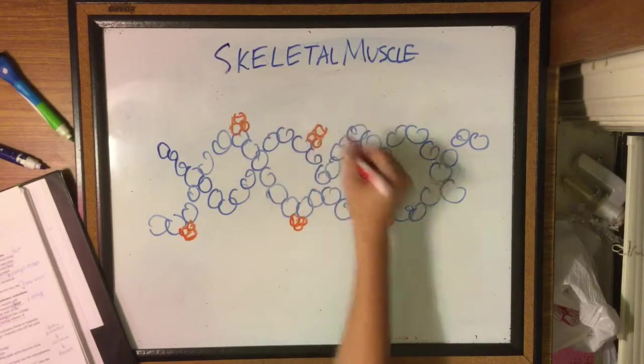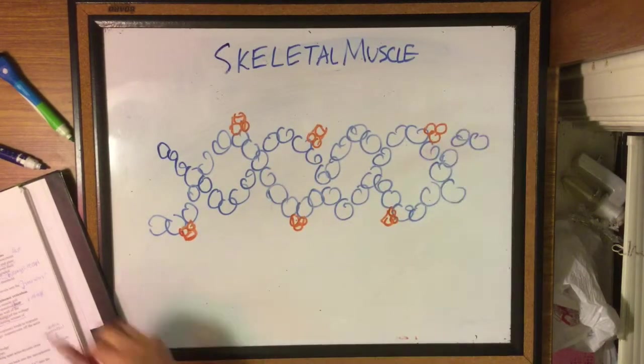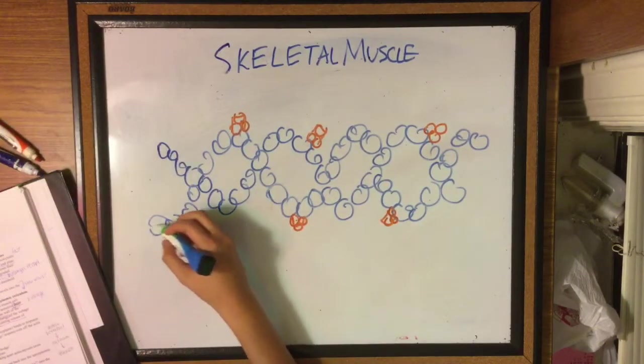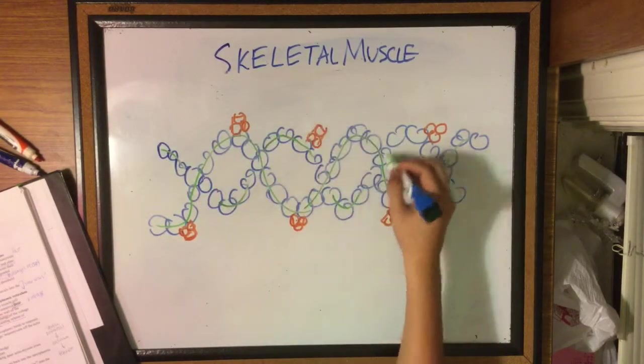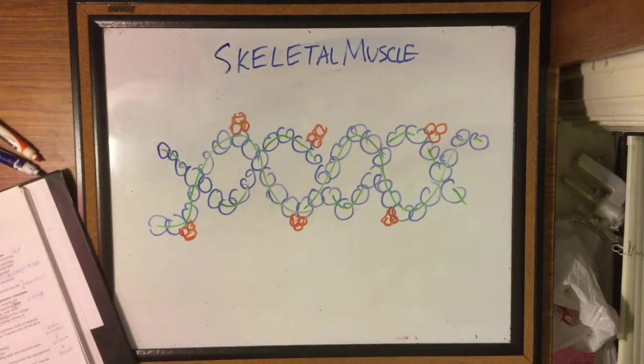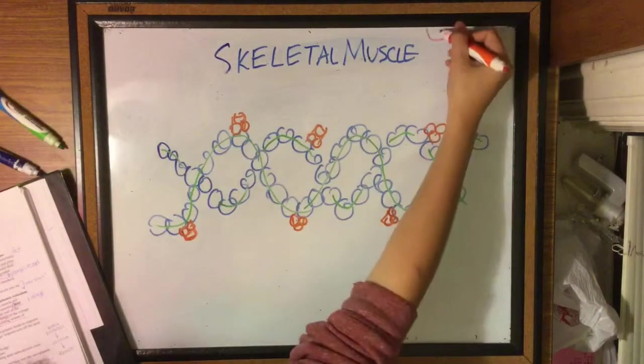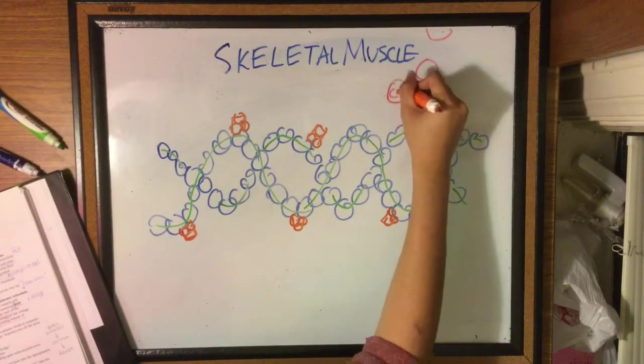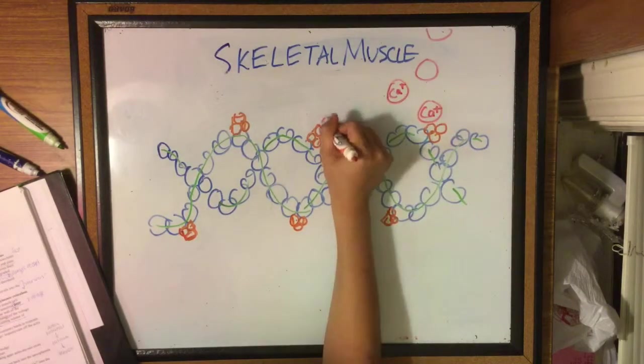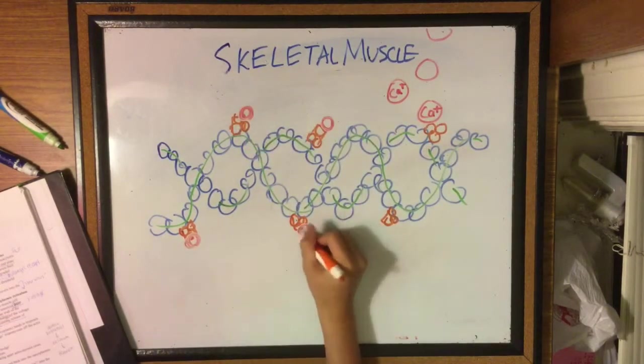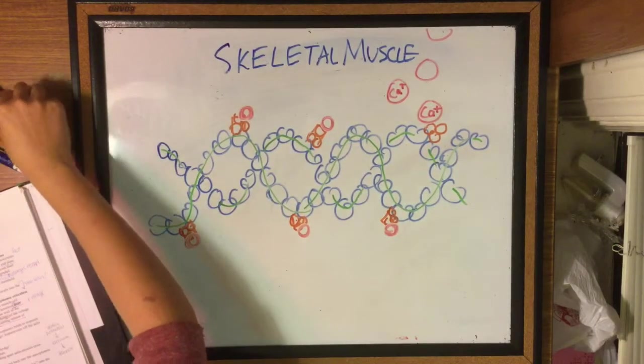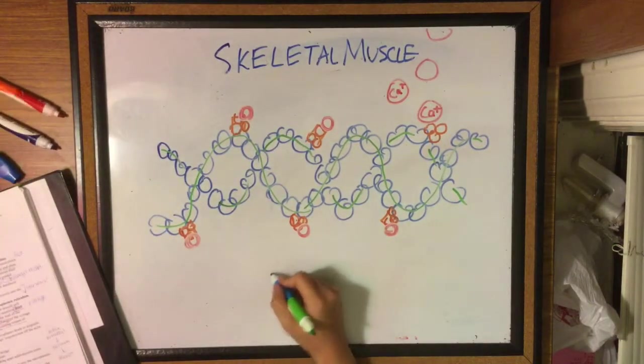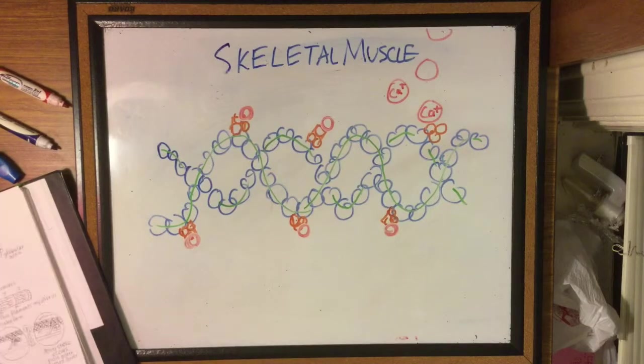Troponin has tropomyosin binding site, actin binding site, and calcium binding site. Then there's tropomyosin which lies in the groove of the actin and basically just blocks the binding site for myosin. So now the calcium comes in and binds to the troponin, which leads to a conformational change that drags the tropomyosin off of the actin site in order to expose the myosin binding sites.